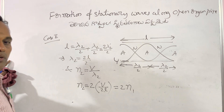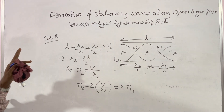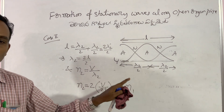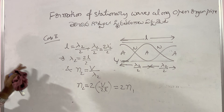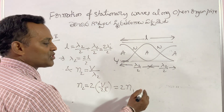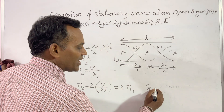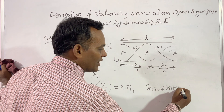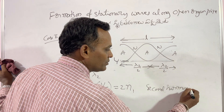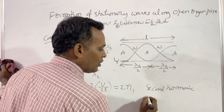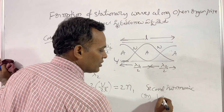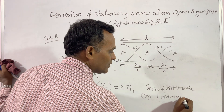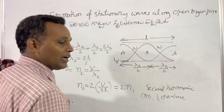Substituting λ2 = 2L/2, we get n2 = 2 × V/2L = 2n1. This is known as the second harmonic, or the first overtone.